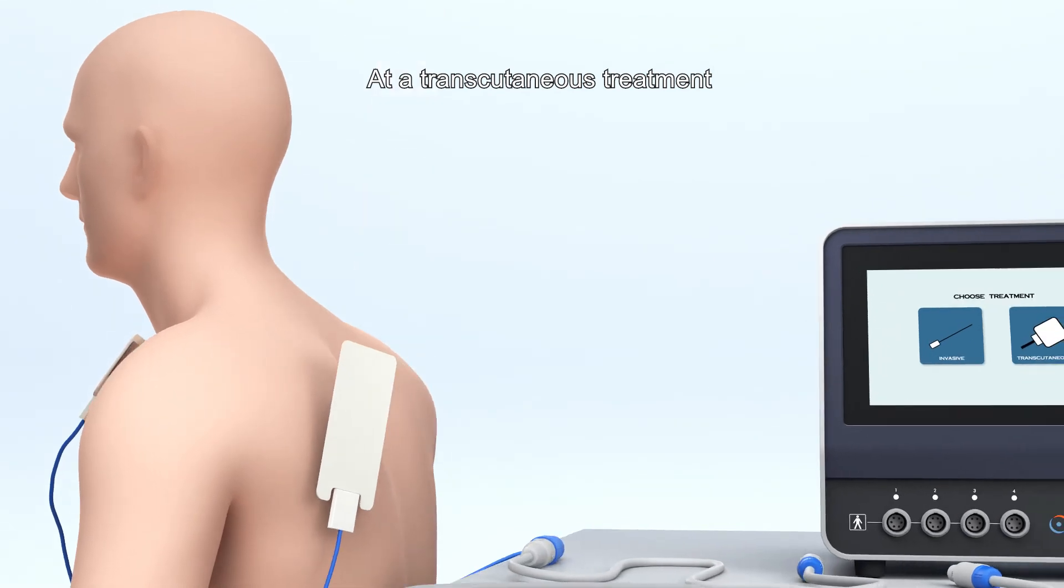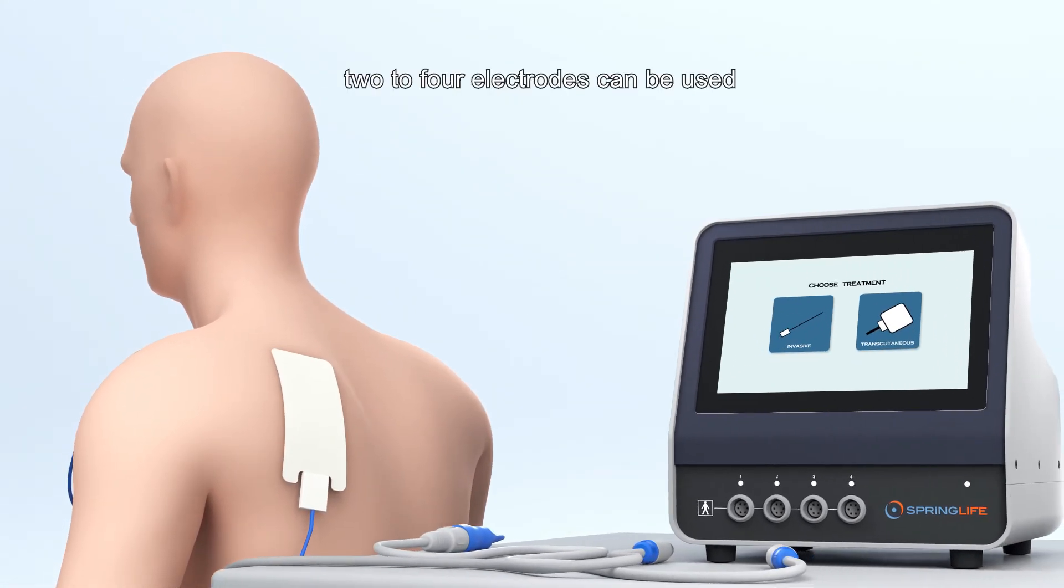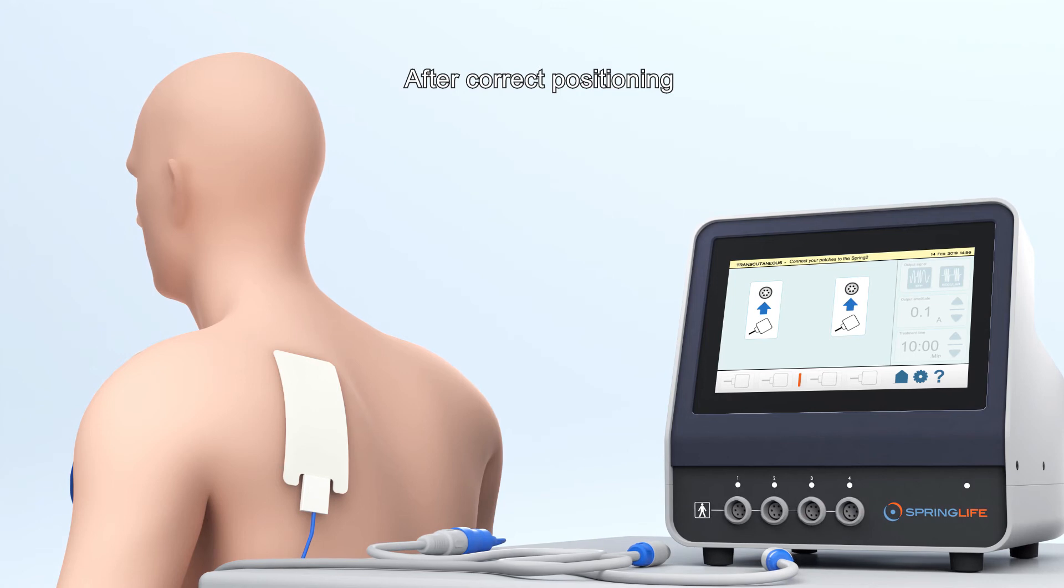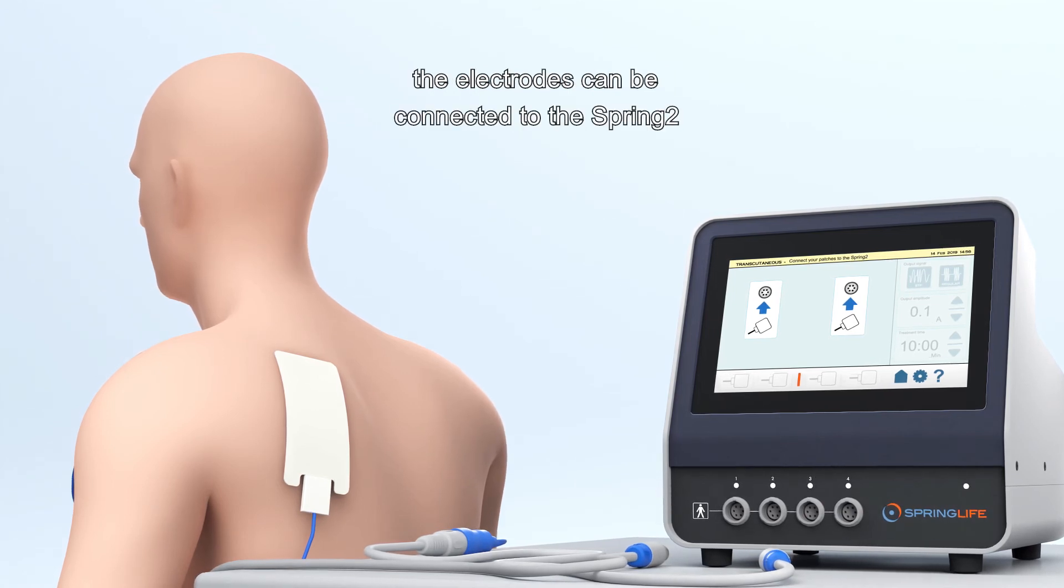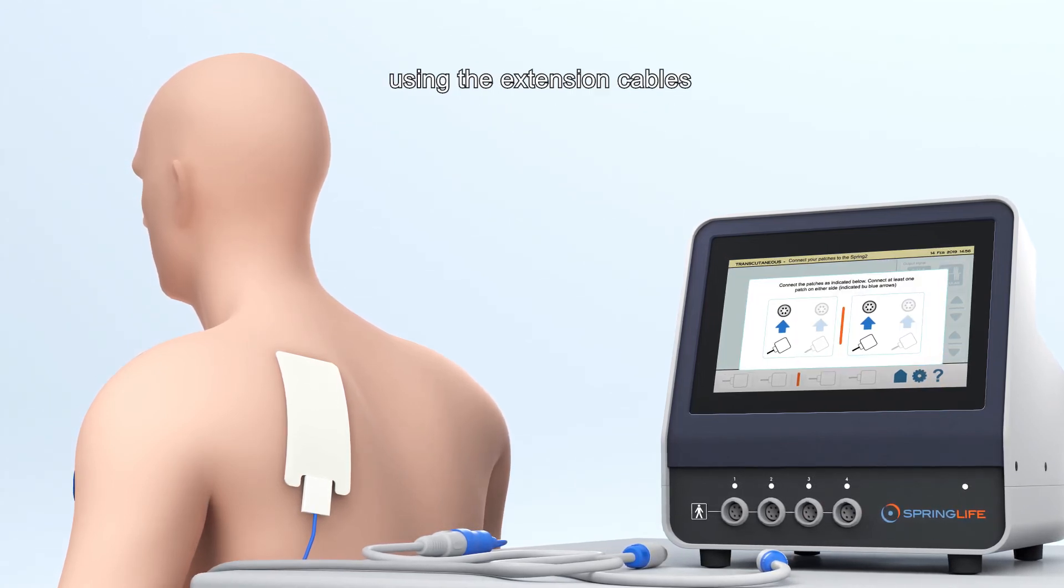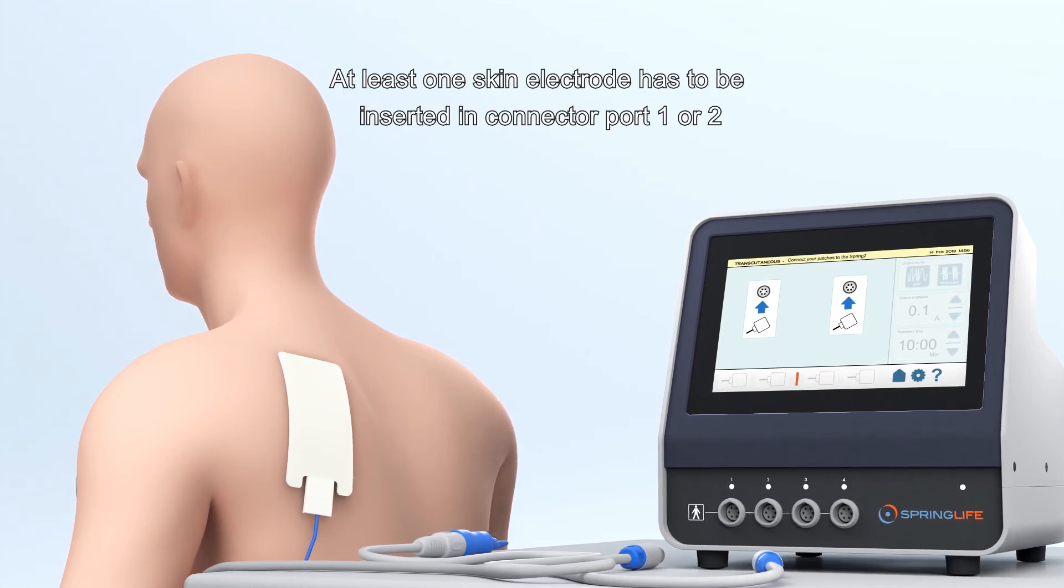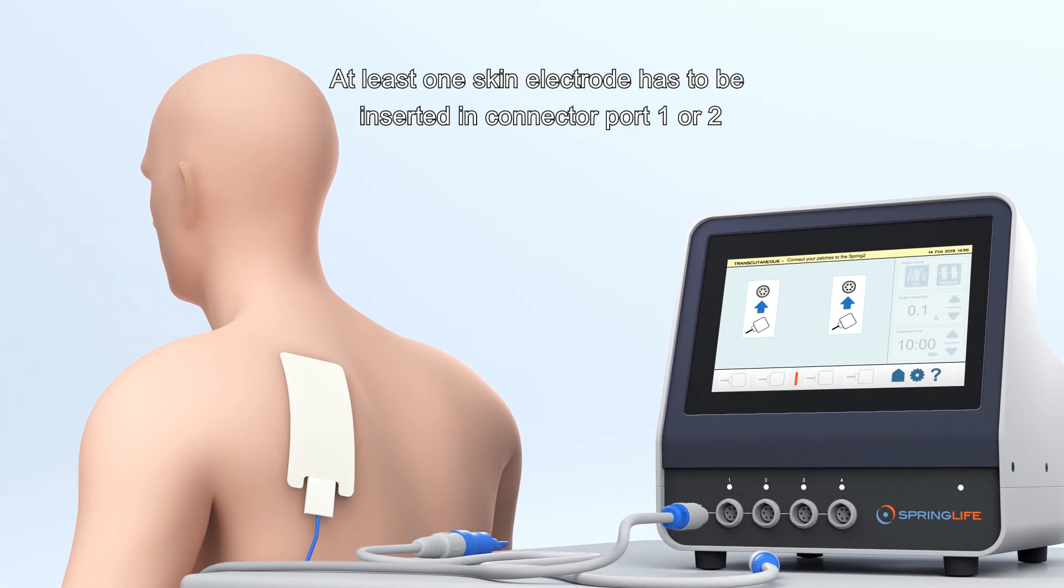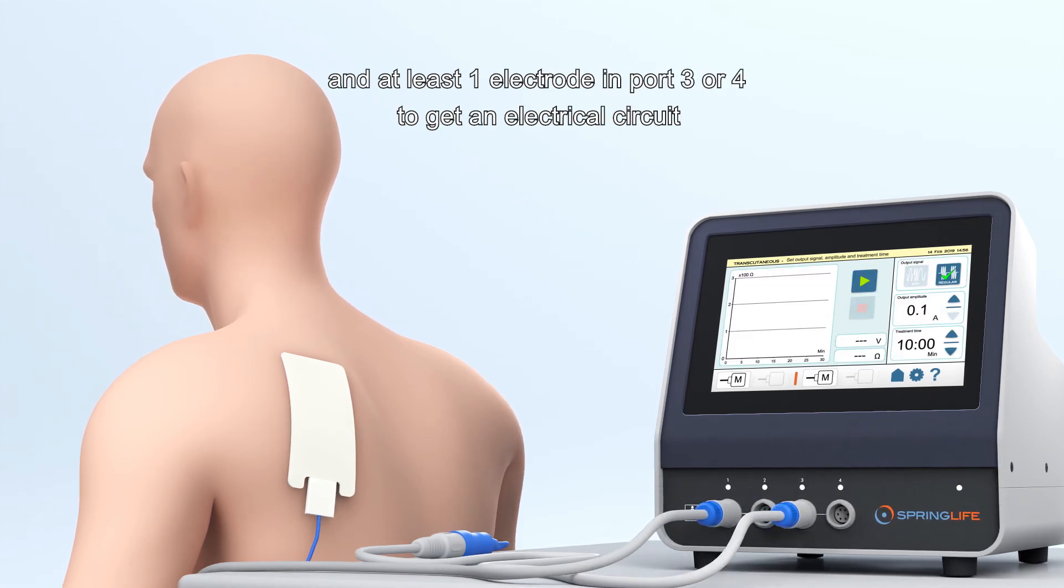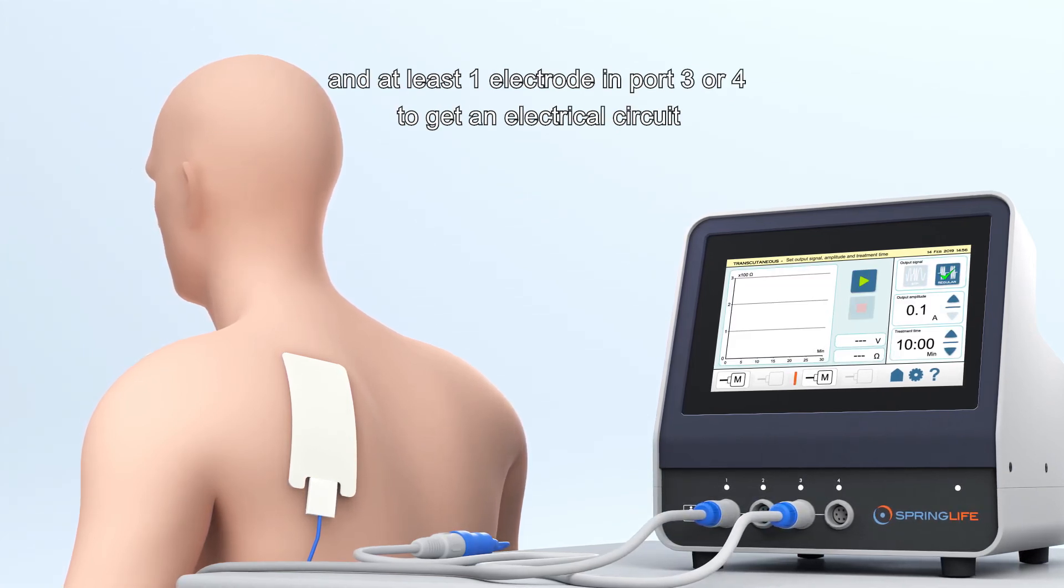At a transcutaneous treatment, two to four electrodes can be used. After correct positioning, the electrodes can be connected to the Spring 2 using the extension cables. At least one skin electrode has to be inserted in connector port 1 or 2 and at least one electrode in port 3 or 4 to get an electrical circuit.